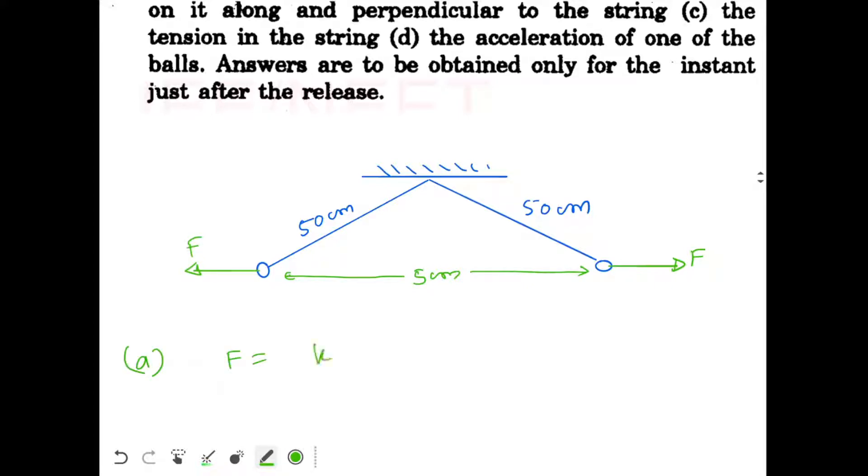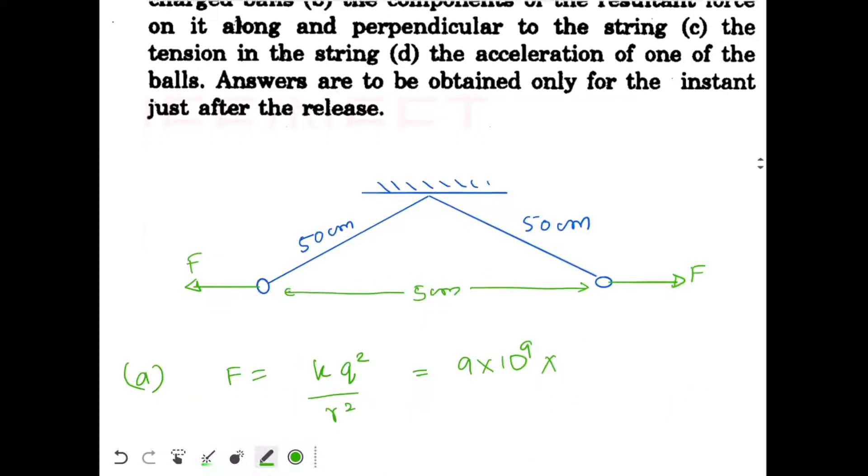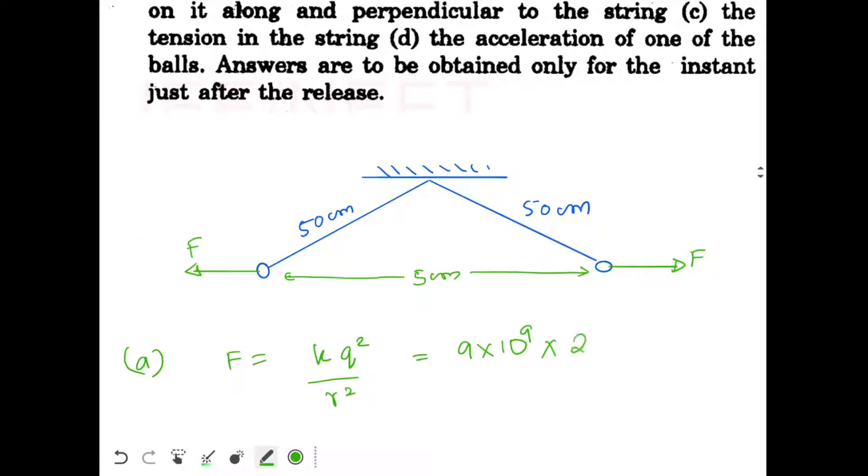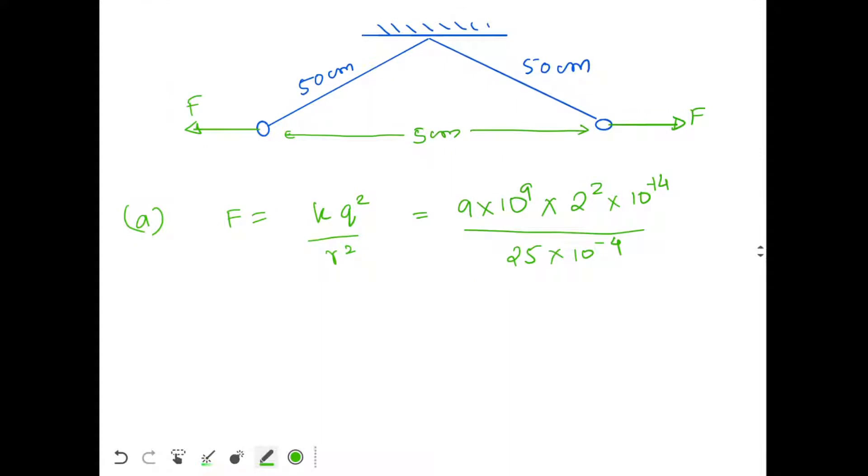Value of F will be K Q² divided by R square. K is 9 x 10^9, Q is 2 x 10^-7, so 2² x 10^-14 divided by R. R is 5 cm, so square of R will be 25 cm square, that is 25 x 10^-4. We are solving for SI units.